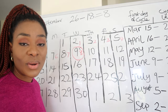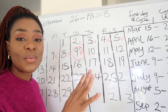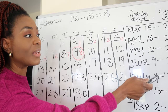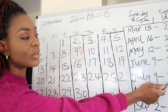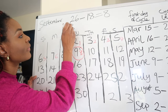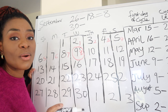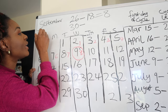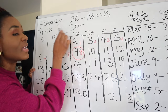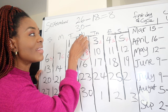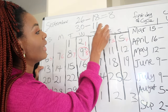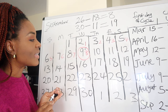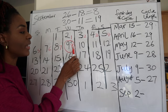Now that you know the beginning of your fertile window, the next step is finding the end — when does the window close? Take the longest cycle length from your six-month record. For me that's 30 days from July. This time you subtract 11: 30 minus 11 equals 19. Remember, the luteal phase is between 11 and 18 days — we already used 18, now we use 11.